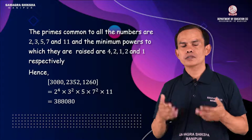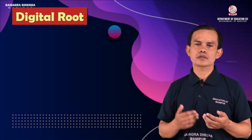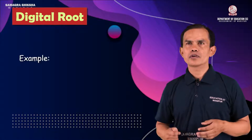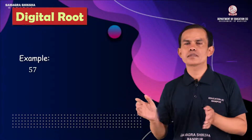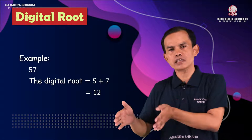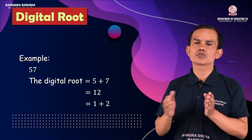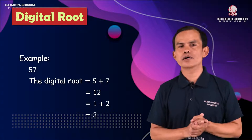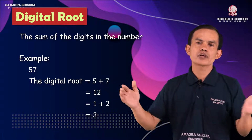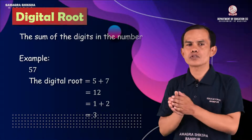Now, the digital root of a number. The digital root is obtained by repeatedly summing the digits of a number until you reach a single digit. For example, the digital root of 12 gives a single-digit result. This concept of the digital root is important in the number system.